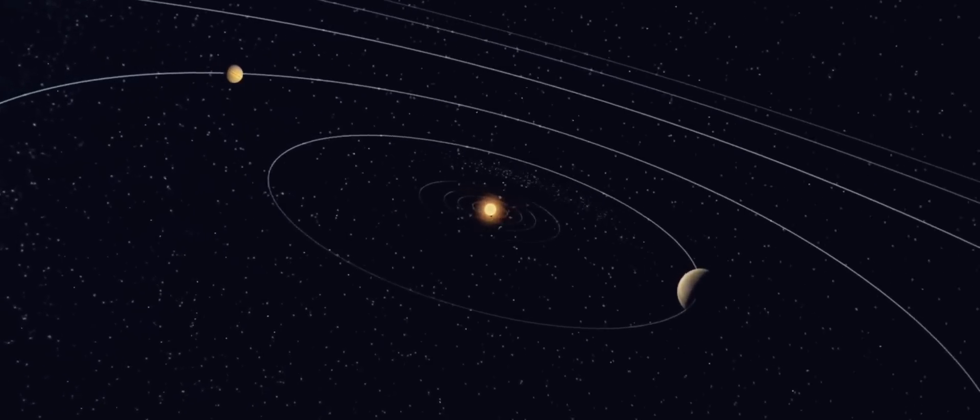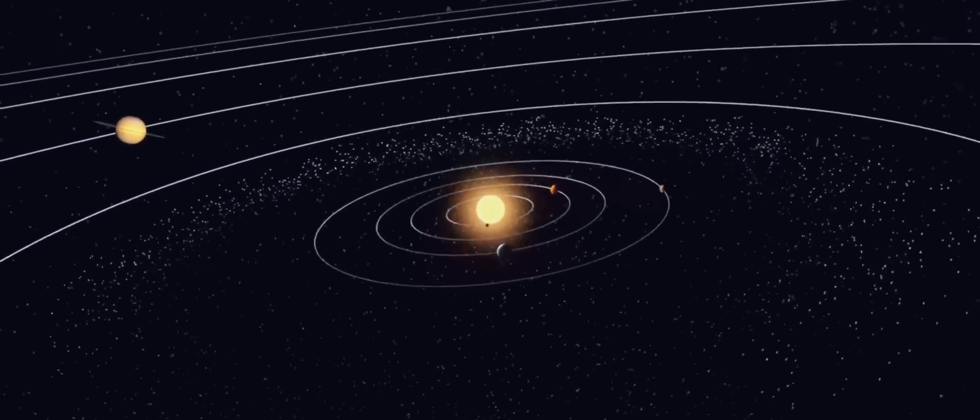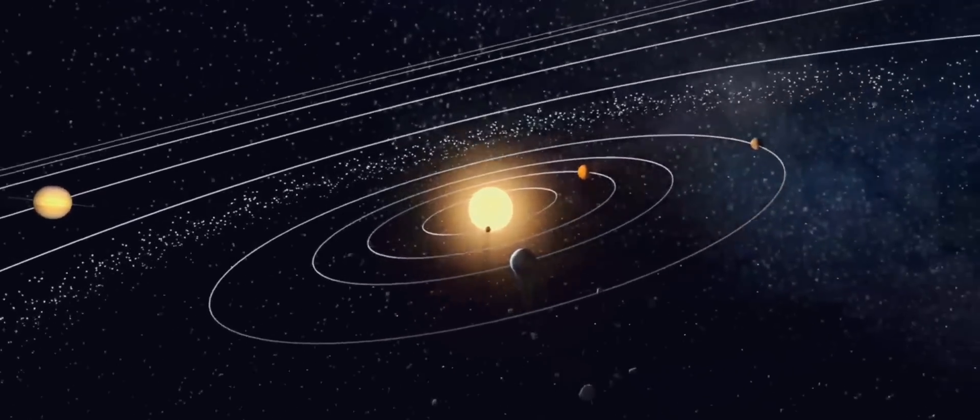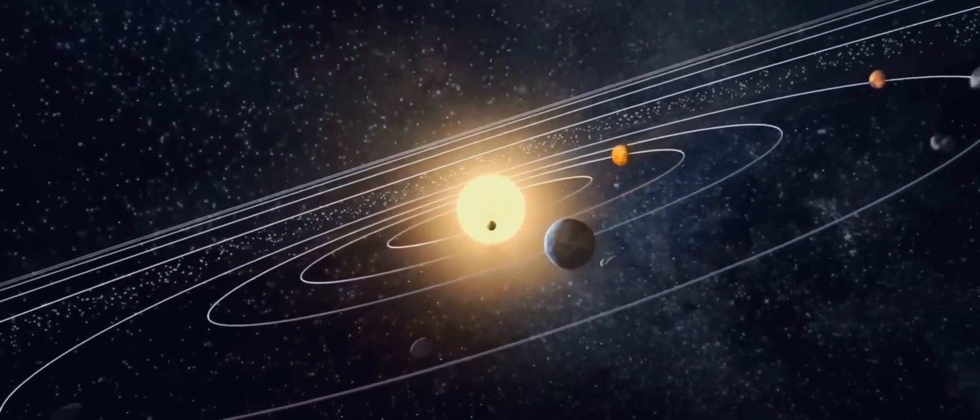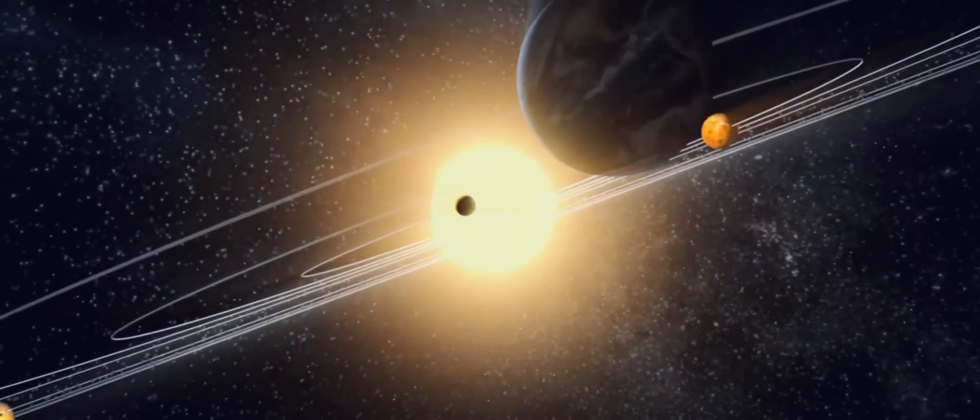But Einstein's math shows that if you don't have a rocky object that's isolated in space but rather energy that is uniformly spread through a region of space, that that kind of entity yields repulsive gravity.